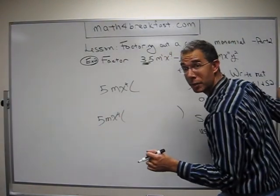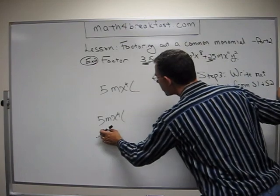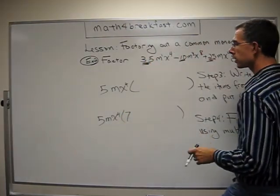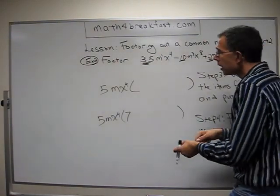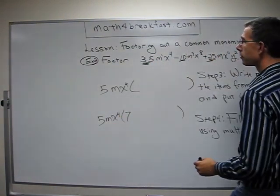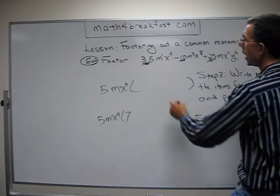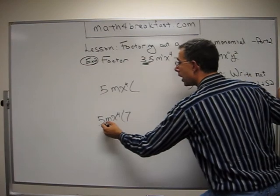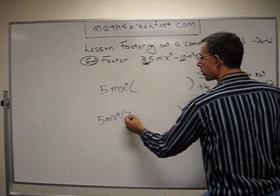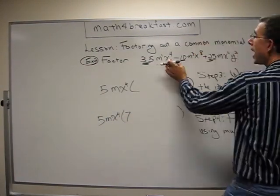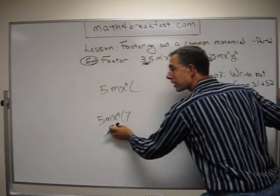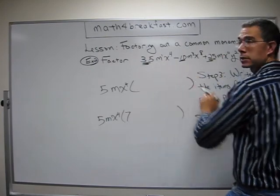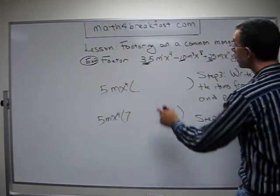I'm going to rewrite the problem so your notes flow nice and neat. The question is, 5 times what gets me back to 35? 5 times 7, 35. Excellent. Question. I need an m here. Do I have an m out here? Yes I do. Do I have enough? Yes. I don't need any more m's, so I don't need to write any more m's in here. X to the 4th. I already have an x to the 4th out here, so I don't need to put any more x's in here to multiply to get back to this x to the 4th. We are done.